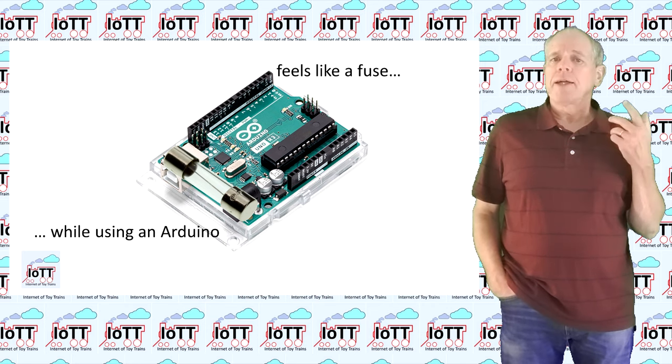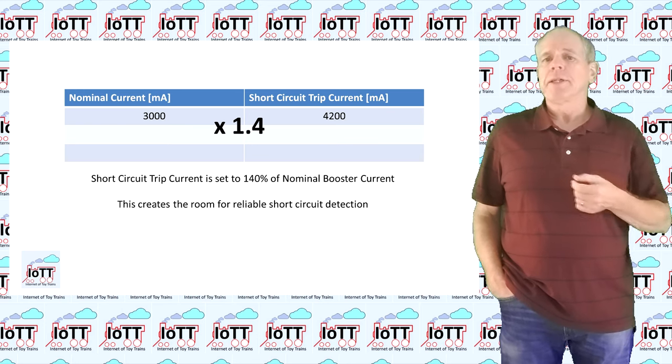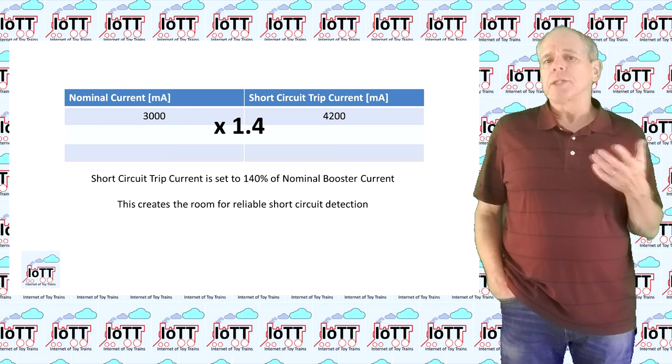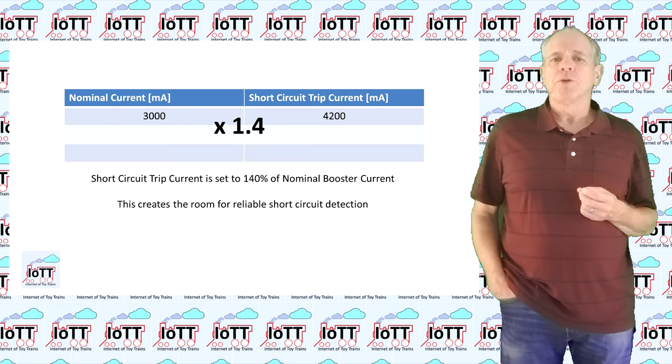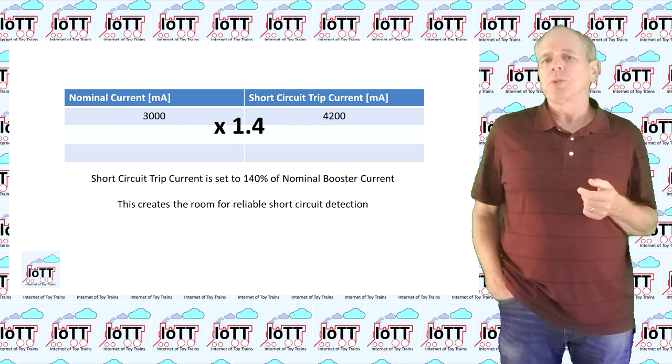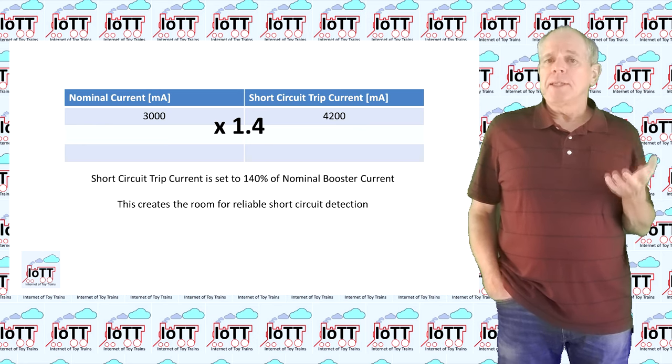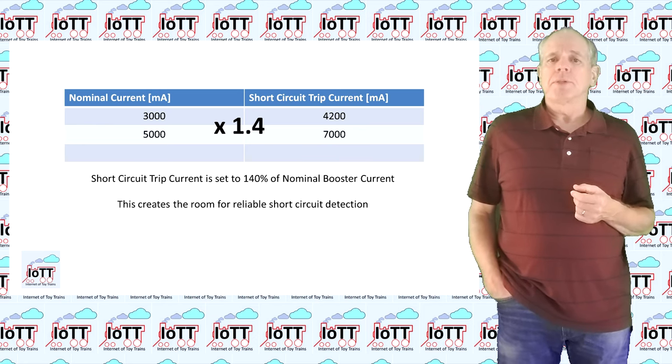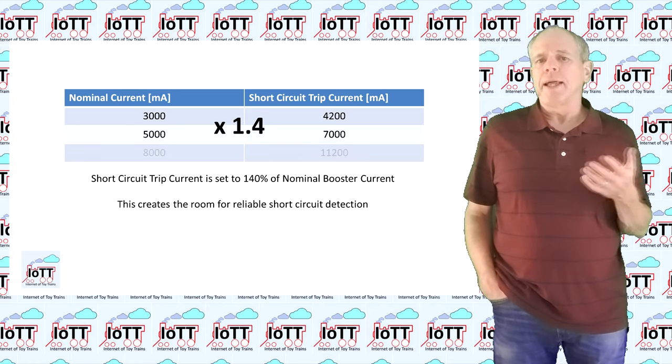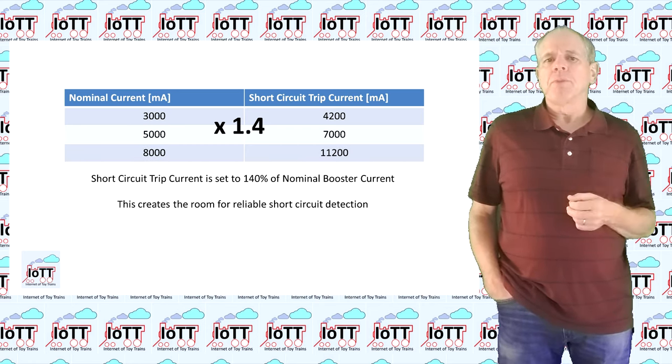The first thing to do is to define the relationship between nominal current and short circuit trip current. After some tests I decided to set this multiplier to 1.4. So if the booster is intended to be a 3A booster, meaning it can provide 3 amps indefinitely, the trip current is set to 4.2 amps. For a 5A booster it would be 7A and for an 8A booster we would end up with a trip current of 11.2A.